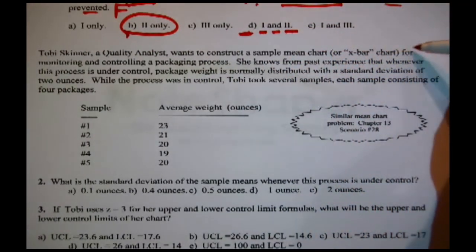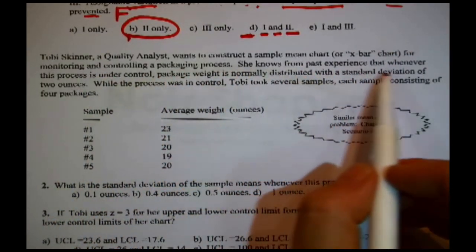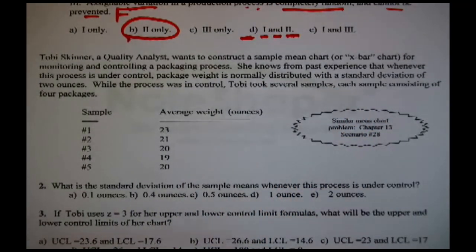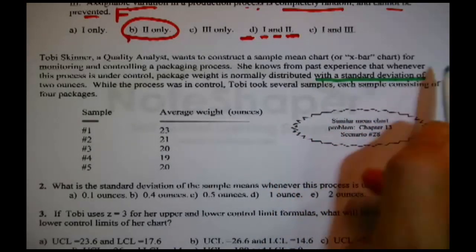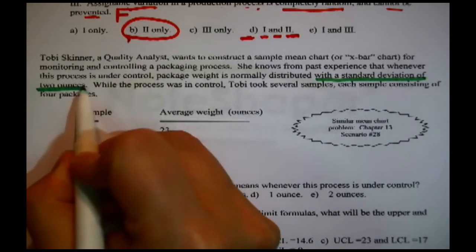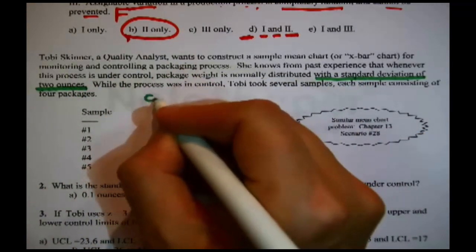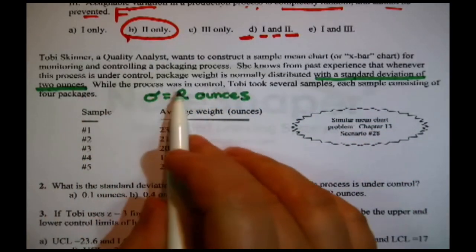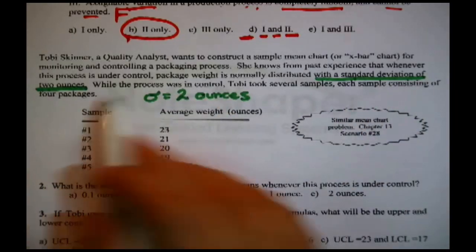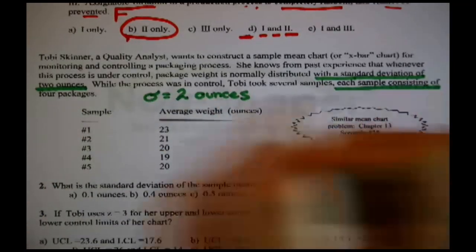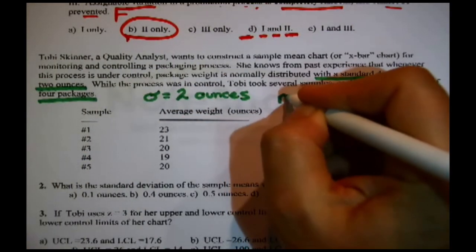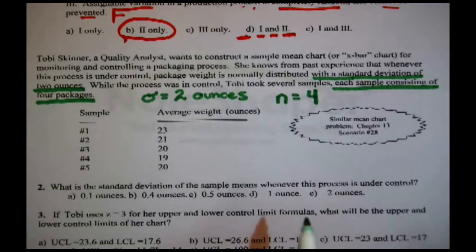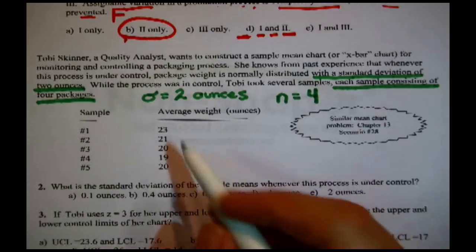Toby Skinner, a quality analyst, wants to construct a sample mean chart or X bar chart for monitoring and controlling a packaging process. She knows from past experience that whenever this process is under control, package weight is normally distributed with a standard deviation of two ounces. So there's this process she wants to monitor and she knows the standard deviation. I'm going to list it again so we don't lose sight of it.